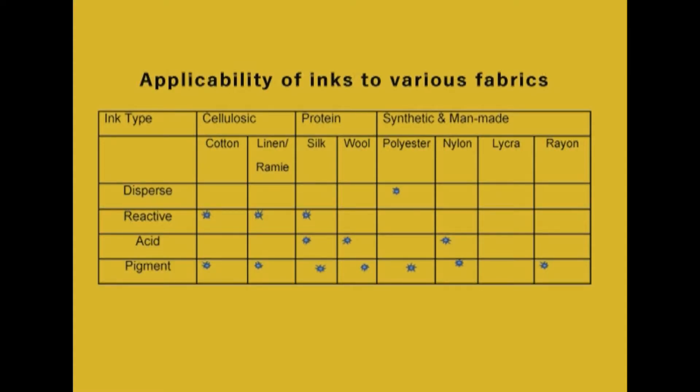The chart here shows the applicability of these inks to various fabrics. There are disperse, reactive, acid and pigment type inks. Cellulosic fabrics such as cotton, linen and ramie; protein fibres like silk and wool; synthetic and manmade fibres like polyester, nylon, lycra and rayon are shown. For example, disperse dye is suitable on polyester fabric; reactive dyes are suitable on cotton, linen, ramie and silk; acid dyes are suitable on silk, wool and nylon; and pigment dyes can be used on all fibres.